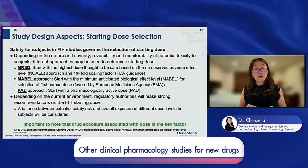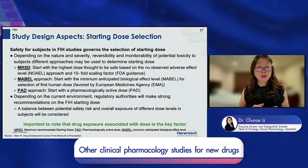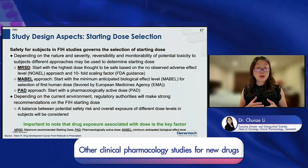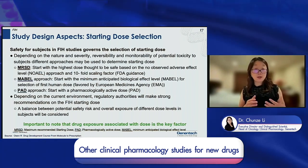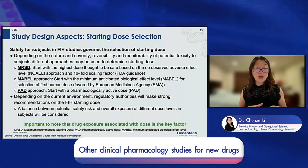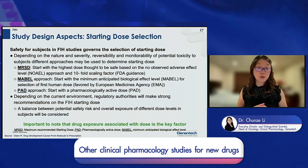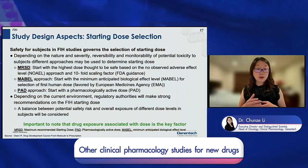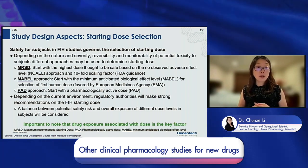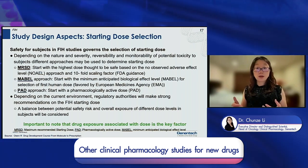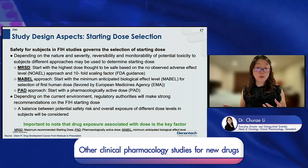To further elaborate how we calculate starting dose selections — there are multiple health authority regulatory guidance documents. As mentioned earlier, safety is the main driver governing the first in-human starting dose. We want to make sure subjects going to be tested in the clinic are safe. The methodology selection is based on the nature, severity, reversibility, and monitorability of the preclinical toxicity associated with the molecule.